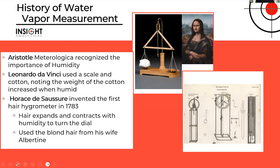Horace de Saussure invented the first hair hygrometer. Those with curly hair probably know that hair changes when it's humid — it expands and contracts with humidity. He built a hygrometer where as the hair contracted it would turn the dial. He found that blonde hairs worked best, and since his wife was blonde, many of the early hair hygrometers were built from his wife's hair.